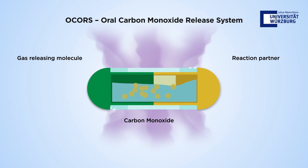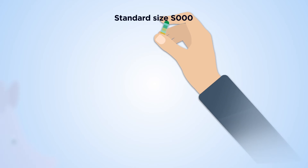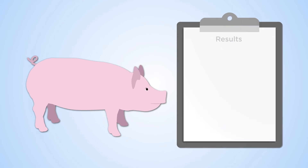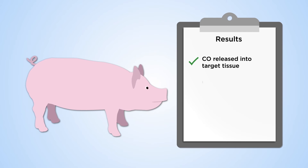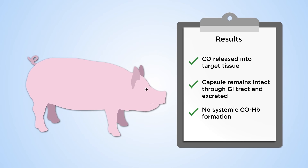The whole capsule is covered by a semi-permeable membrane, which allows the gas to pass through into the surrounding tissue, leaving the toxic byproducts behind. This technology can be used to treat gastrointestinal inflammation, and the capsule design has been successfully tested in pigs. Results showed that carbon monoxide was released into the target tissue, the capsule itself remained intact during passage through the gastrointestinal tract, and no systemic increase in carbon monoxide hemoglobin complex was reported.